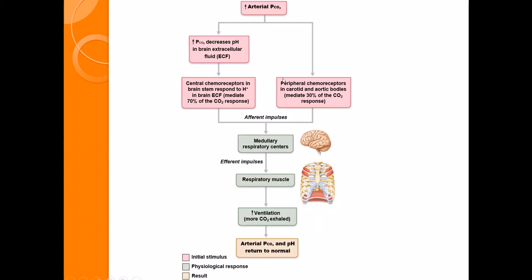So to summarize: if we have an increase in the partial pressure of carbon dioxide, pH decreases around the brain because CO2 combines with water to form carbonic acid, which disassociates into hydrogen ions. That is sensed by chemoreceptors, which send information to the respiratory centers in the medulla. The respiratory centers activate your respiratory muscles, you increase your ventilation — the rate and depth of breathing — more CO2 gets exhaled, and the partial pressure of CO2 and pH return to normal.